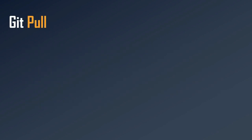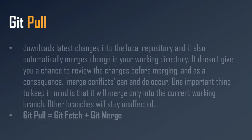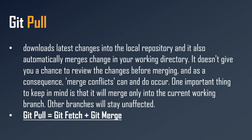Now let's understand git pull. Git pull downloads the latest changes into the local repository and also automatically merges those changes into your working directory. It does not give you a chance to review the changes before merging, and as a consequence merge conflicts can and do occur.